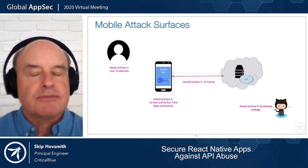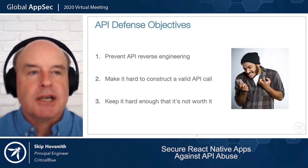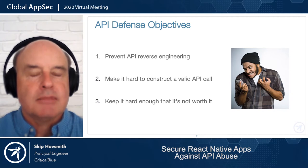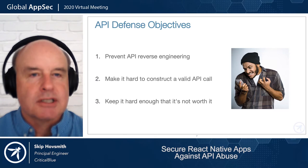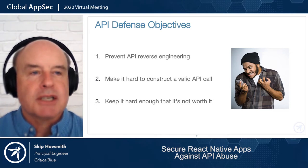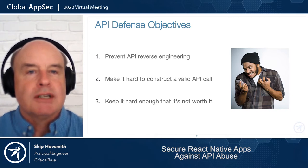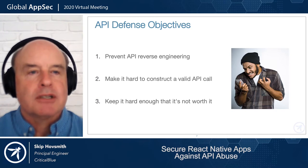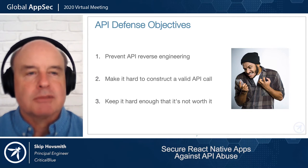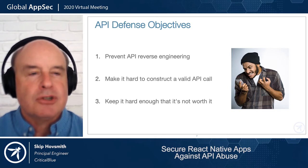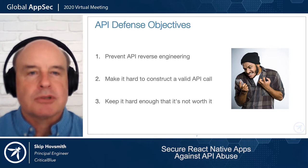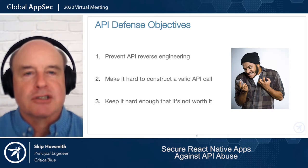So how do you defend your API? Your first approach is preventing reverse engineering — do everything you can to prevent understanding and observing the API in action. That's a tall order and few applications achieve it perfectly. So the second thing is to make it very hard to construct a valid API call. When you require user credentials or an API key, you're trying to prove who or what is using your API. You just need to make it hard enough that it's not profitable for an attacker to spend their time there.